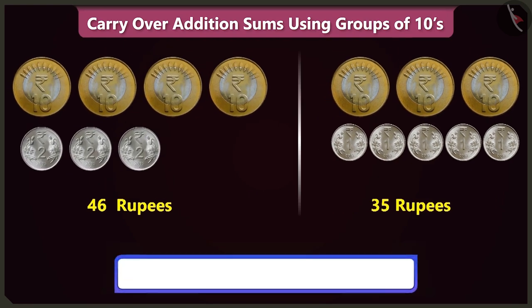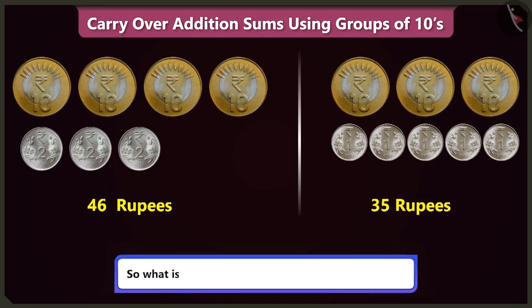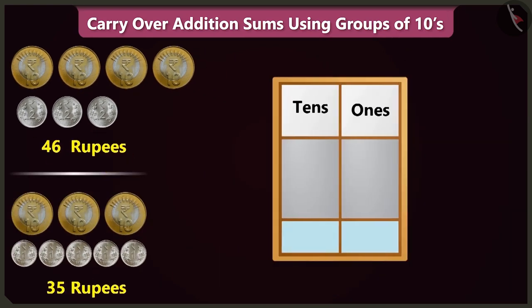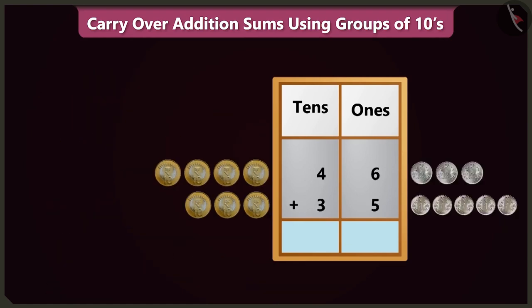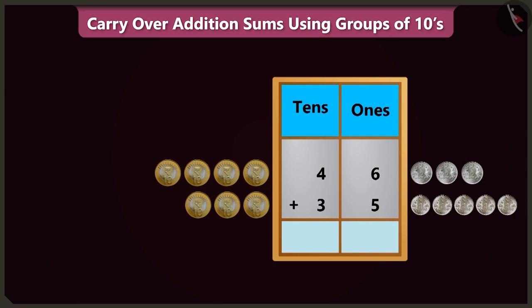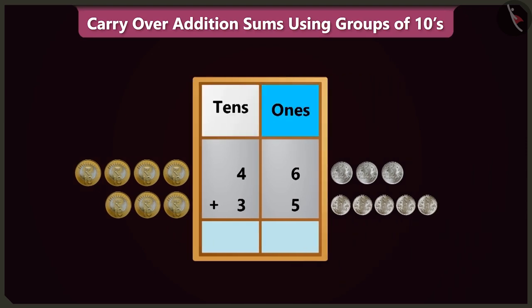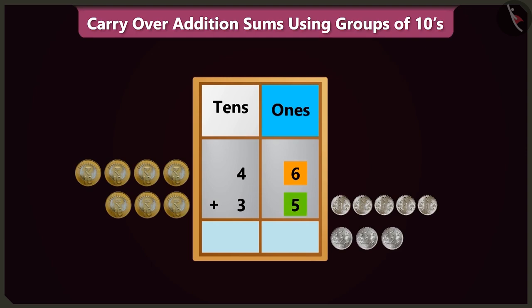So what is the total amount in both the piles of coins? To find that out, we have to write both the numbers in the ones and tens boxes. To add five to six in the ones box, count after six.